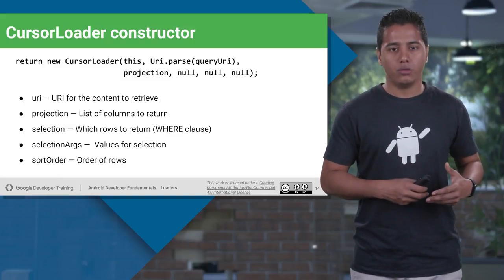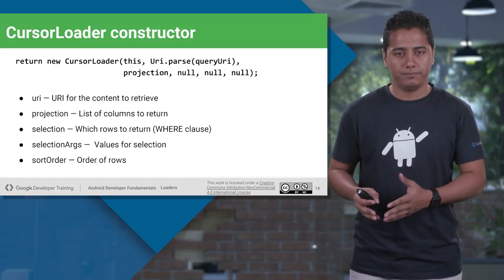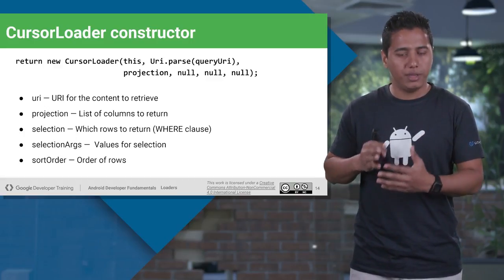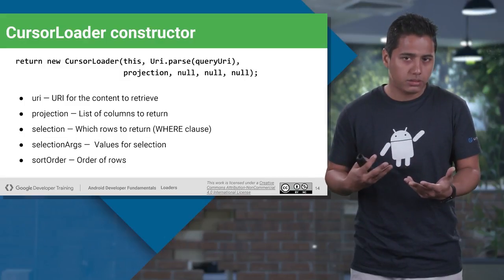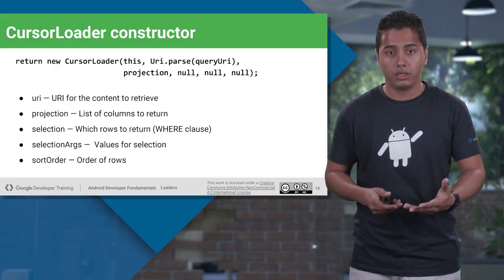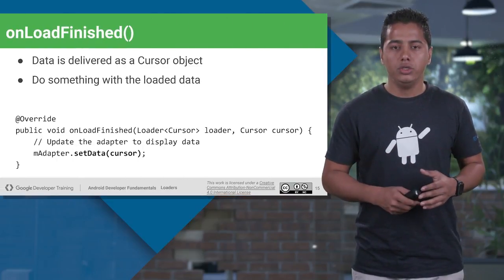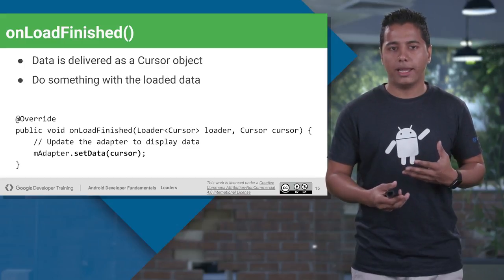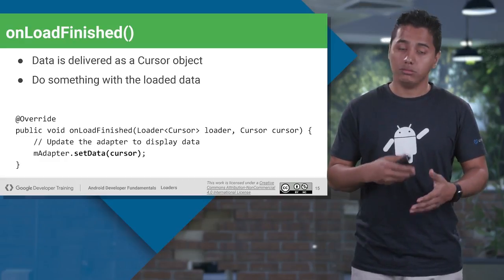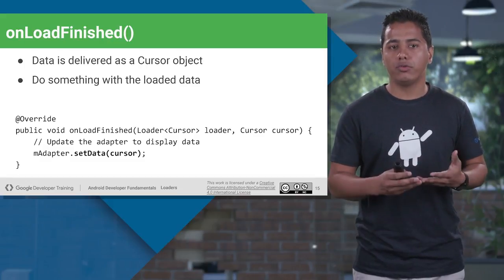Once your data is delivered as a CursorObject, you do something inside your onLoadFinished. The functionality of the onLoadFinished callback method remains the same: once your data is given back and the loader is finished, you will be doing something with your data — maybe loading it into an Adapter class or showing it in a TextView. Your data will be delivered back as a CursorObject, and then it's up to you what exactly you want to do with it.